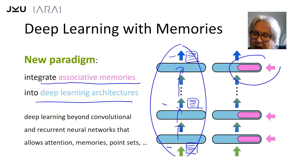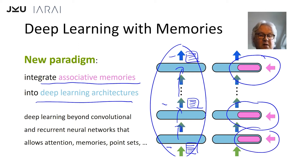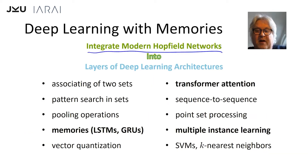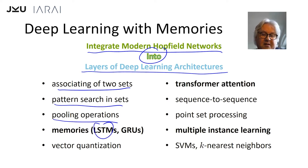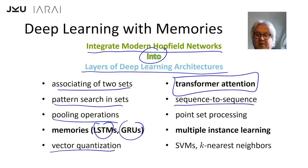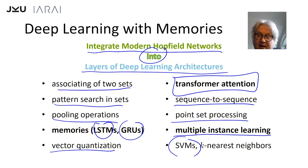But we want to add to each of the layers of the deep neural network an associative memory. Therefore deep learning goes beyond convolutional neural networks or recurrent neural networks and allows for attention, memories, and point sets. We want to integrate modern Hopfield networks into the layers of deep learning architectures in order to allow for association of two sets, pattern searching, pooling operations, memories like LSTMs or gated recurrent units, vector quantization, transformer attention, sequence-to-sequence learning, point set operations, multiple instance learning, support vector machines in each layer, k-nearest neighbors in each layer, or learning vector quantization.